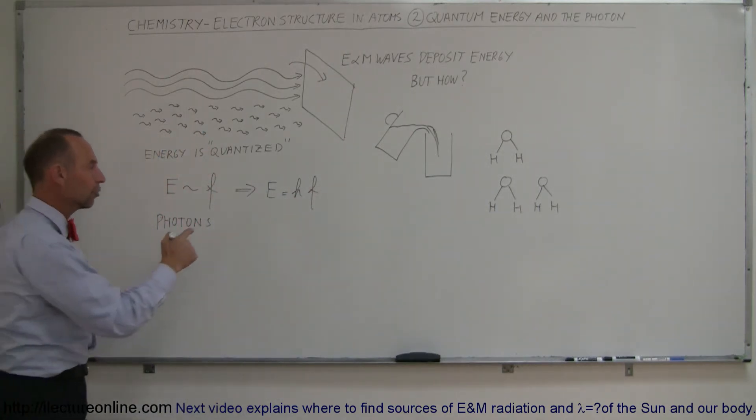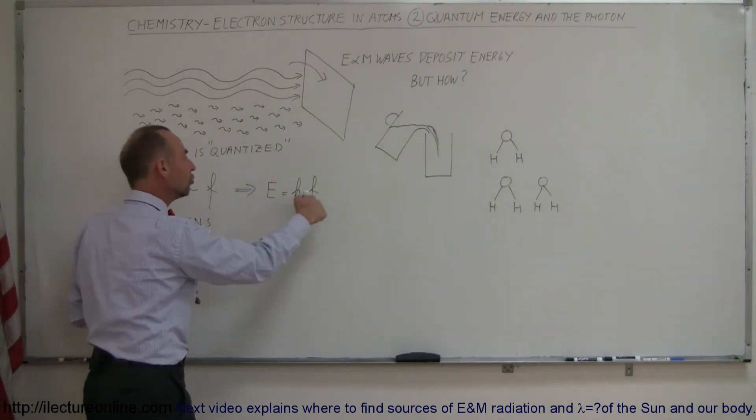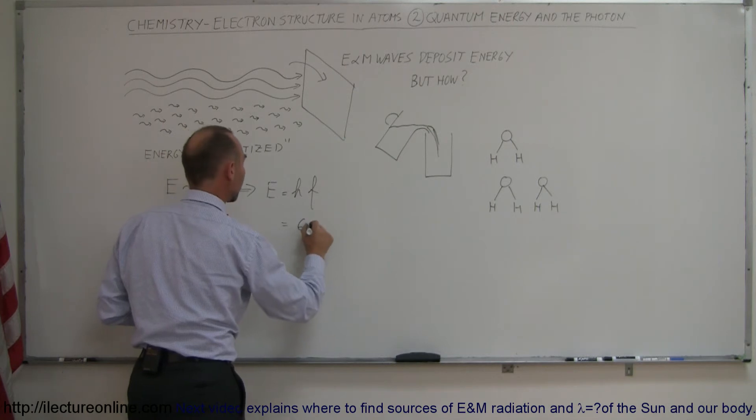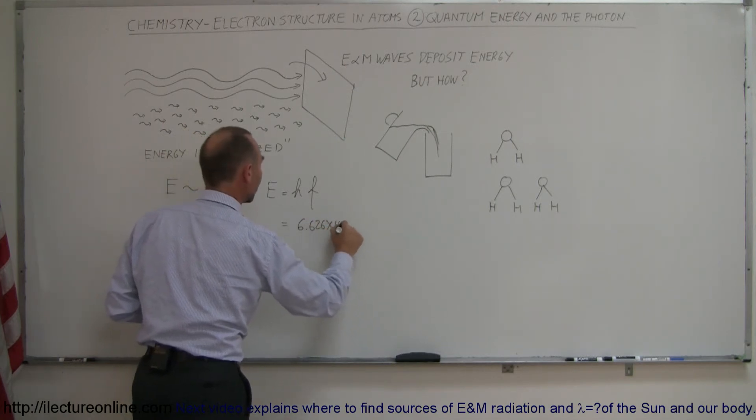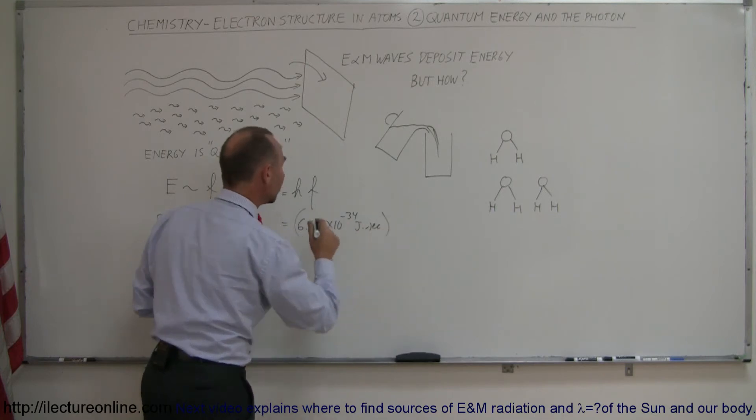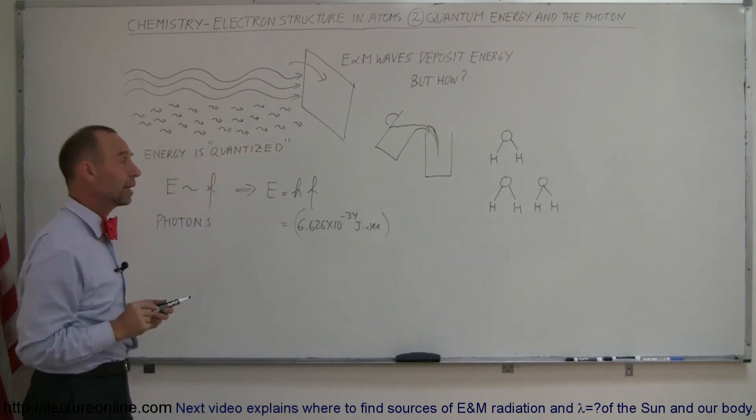It's a constant that they figured out that turned the energy of a quanta into a real equation. Now H is equal to 6.626 times 10 to the minus 34 joules times seconds. And the frequency, well that depends on the frequency of the radiation.